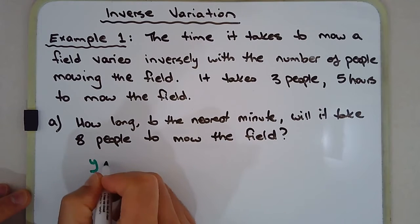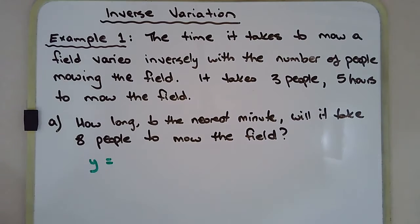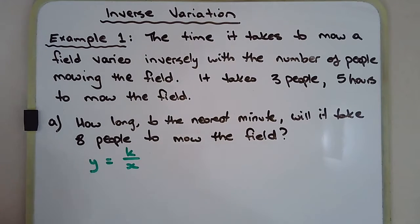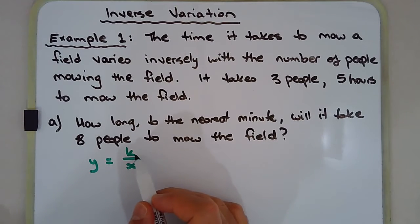So first of all, what we'll do is let's set up our variation equation. So this is inverse variation, and it's going to look like this. Y equals K over X. And I mentioned hyperbolas before, if you graph this, K is a constant, obviously doesn't make sense for it to be zero. So K is a constant.